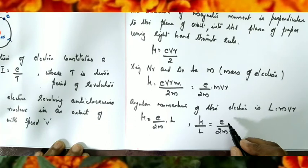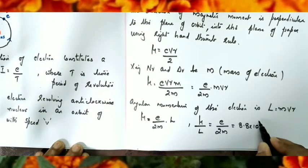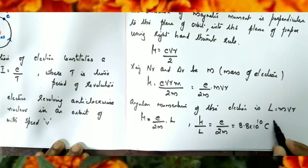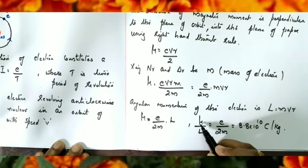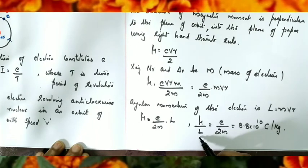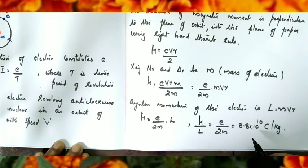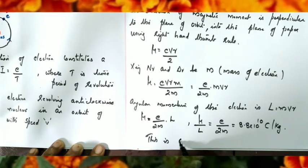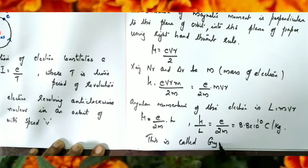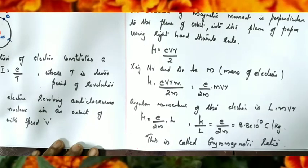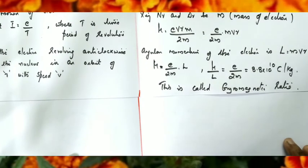Substituting values, μ/L = e/2m = 8.8×10¹⁰ coulomb per kilogram. This ratio of magnetic dipole moment to angular momentum is called the gyromagnetic ratio, and its value of 8.8×10¹⁰ C/kg has been verified by experiments.